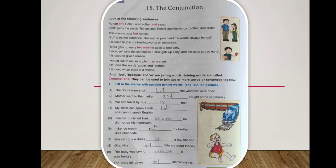I would like to eat an apple or an orange. So 'or' joins the words apple and orange. It is used when there is a choice. And, but, because, and or are joining words. Joining words are called conjunctions. They can be used to join two or more words or sentences together.